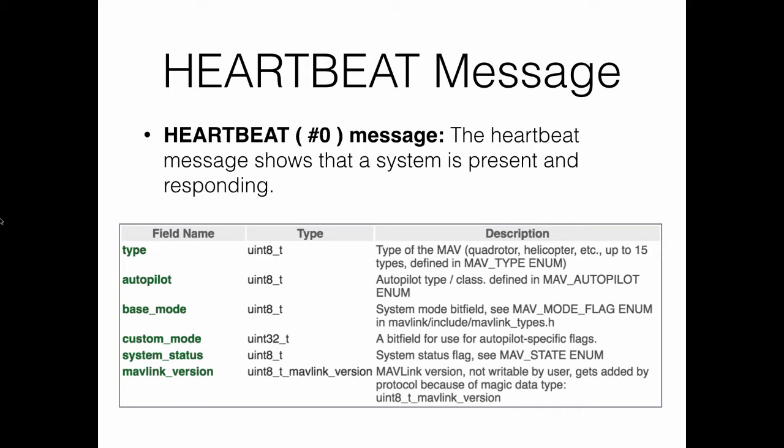The base mode field indicates different operation modes, encoded in 8 bits with 8 predefined flags from 2^0 to 2^7. For example, 2^7 equals 128 and indicates that the motors are armed; 2^2 equals 4 and indicates auto mode is enabled; 0 indicates custom mode is enabled. The custom mode provides autopilot-specific flags and is interpreted in addition to the base mode. Predefined custom mode values include: 0 for stabilized, 4 for guided, 10 for autonomous, 11 for return to launch, 9 for land, 2 for alt hold, and 5 for loiter.